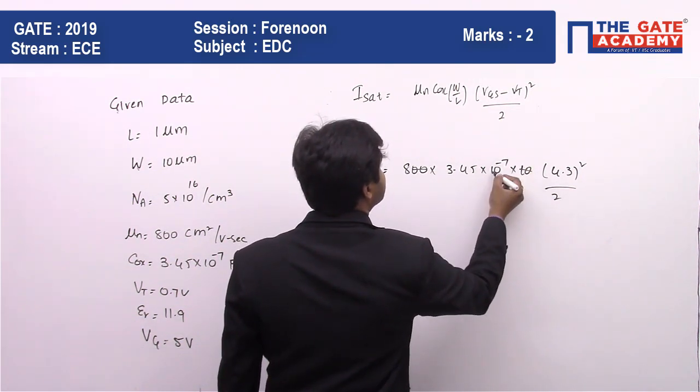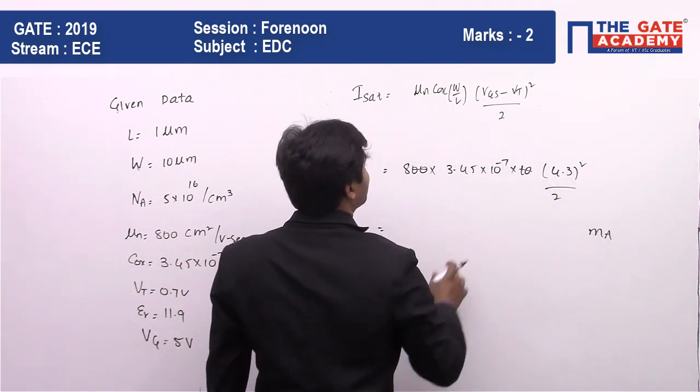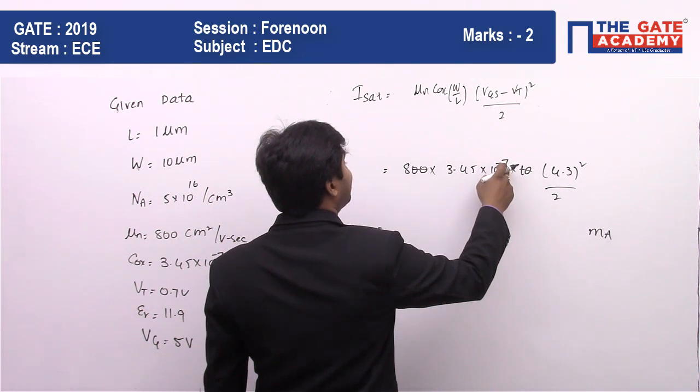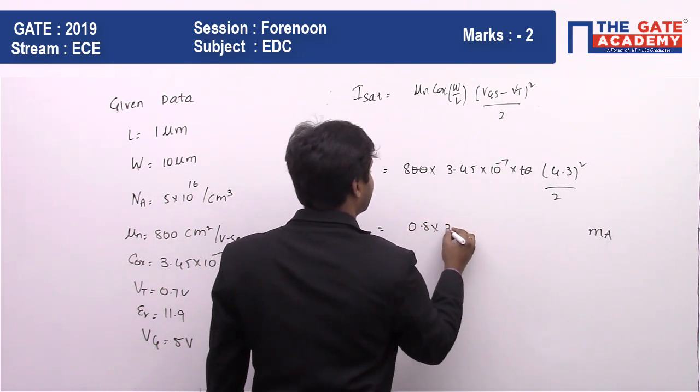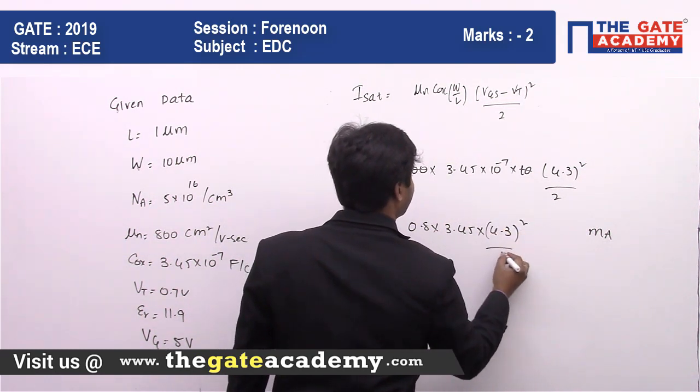10^-3 will be milliamperes, so 10^-1 will be there, multiplied by 8, it's going to be 0.8, multiplied by 3.45 into 4.3 whole square, divided by 2.